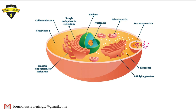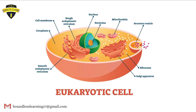You guessed it right — it is the eukaryotic cell, the advanced cell. The eukaryotic cell is the cell where a nucleus surrounded by a nuclear membrane is present. Now, this is a very important cell organelle which plays a major role in the production of energy, or in the production of ATP.